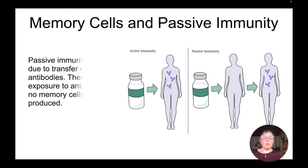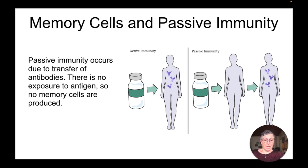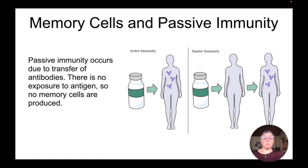When we talk about memory cells and passive immunity, passive immunity is just the transfer of antibodies from one person to another. There's no exposure to an antigen, so there are no memory cells produced. You must be exposed to an antigen in order to elicit the immune response of the lymphocyte producing the memory cells.